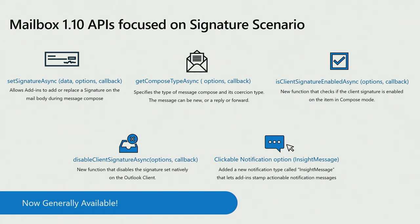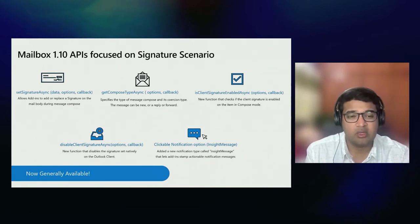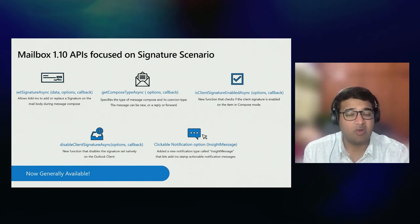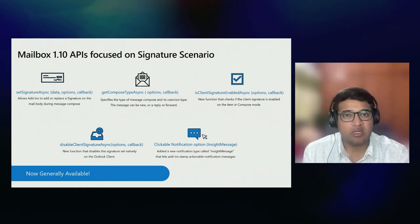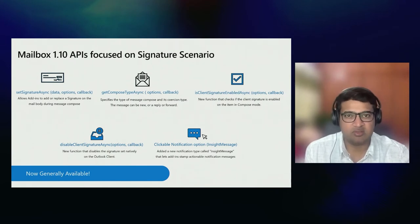Next we have GetComposedTypeAsync, which is really useful if you want to know the type of mail being composed — whether it's a reply, a forward, or a new mail. This is useful if you want a different signature when replying versus composing a new mail. We also have IsClientSignatureEnabledAsync and DisableClientSignatureAsync. These APIs are useful if you need to disable the native Outlook signature the user has set, so they always use the admin-defined add-in-managed signature — achieving this kind of compliance.